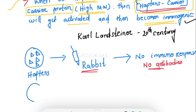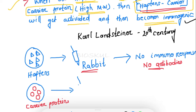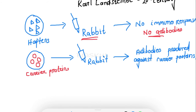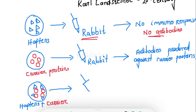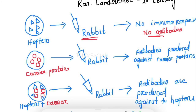In the second case, carrier proteins — which are high molecular weight — were injected into the rabbit, and antibodies were produced against the carrier proteins. In the third case, he conjugated haptens with carrier protein, and the hapten-carrier conjugate was injected into the rabbit. Here, antibodies were produced against the haptens.